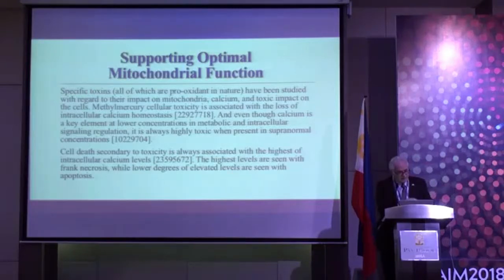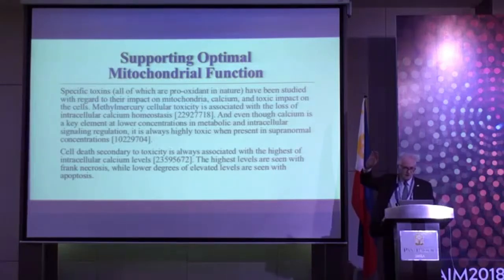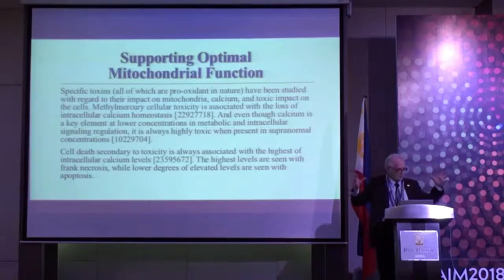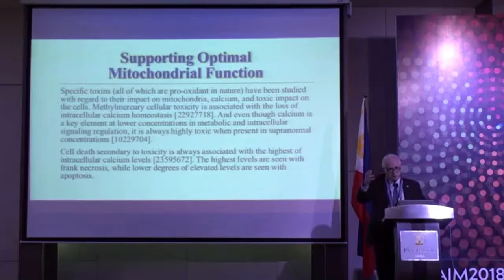Cell death secondary to toxicity is always associated with the highest intracellular calcium levels. When calcium levels get really high really quickly, you get frank necrosis — rupture of the cell. When they elevate more gradually, that's when you initiate programmed cell death, or apoptosis.